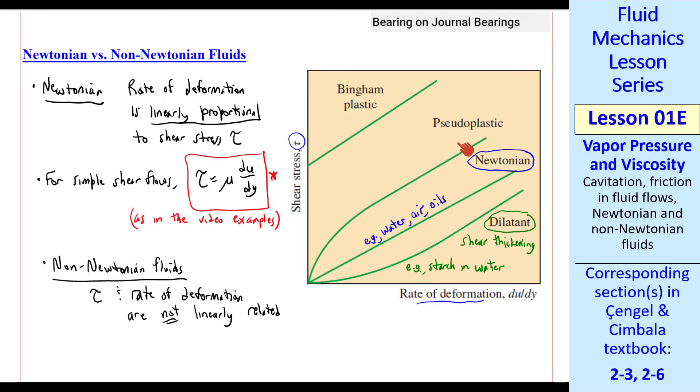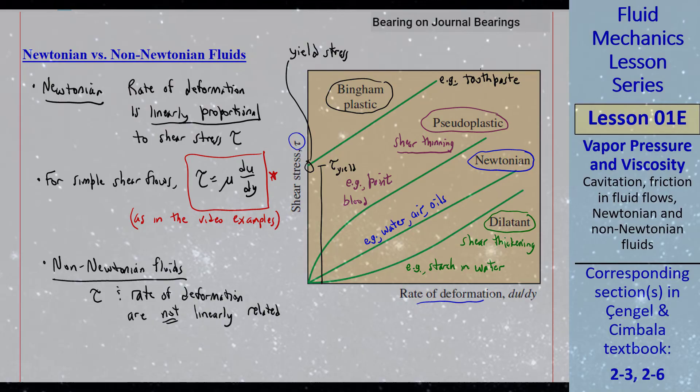This is the curve for a pseudo-plastic fluid, or a shear thinning fluid. Examples are paint and blood. A Bingham plastic looks fairly linear, but there's a yield stress up to some certain tau. The yield stress, a Bingham plastic, behaves like a solid. Once you reach that shear stress, then it behaves like a fluid. A good example is toothpaste. Toothpaste is an example of a Bingham plastic.